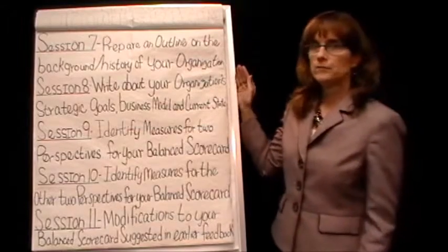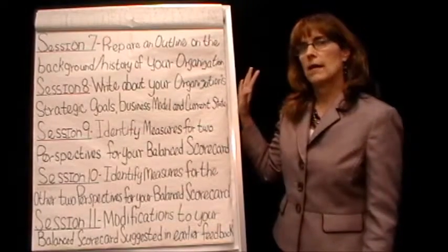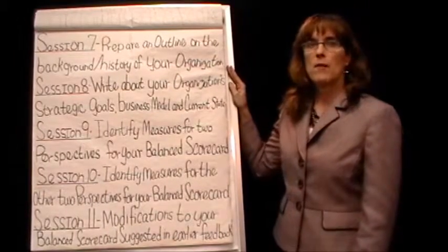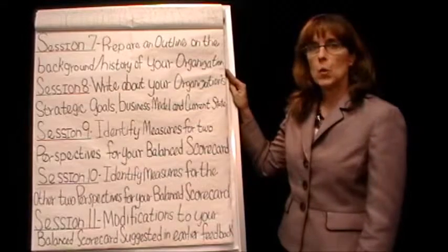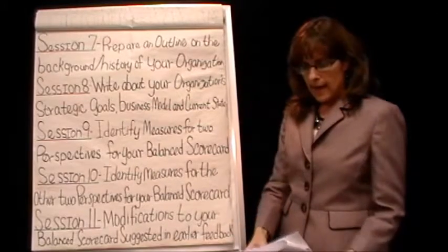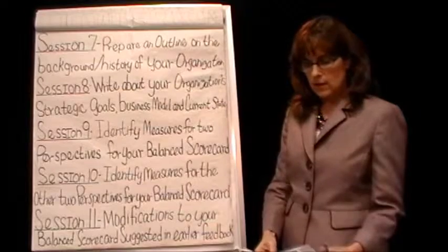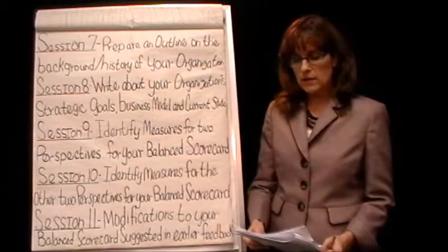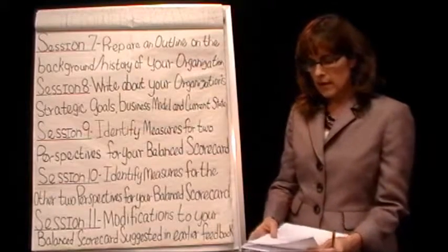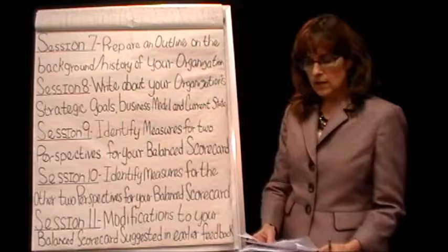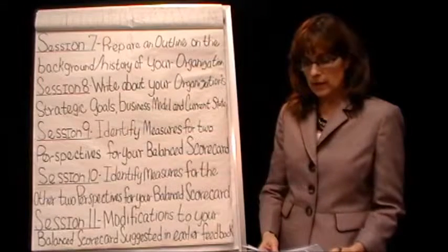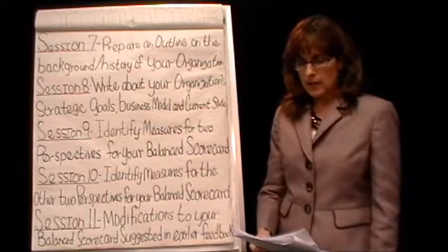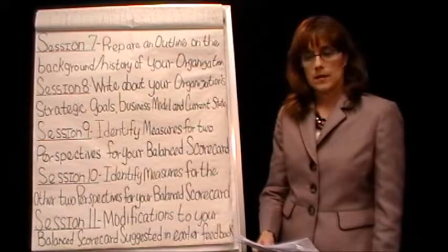In session 7, when we really start the managerial accounting portion of this class, you're to prepare an outline on the background or history of your organization. There are actually some directions in your balanced scorecard project that cover these weekly assignments. Some things you should definitely include: mention the unit within the organization that you are employed, give an overview of the main customer segments, the size of the organization, and its history.